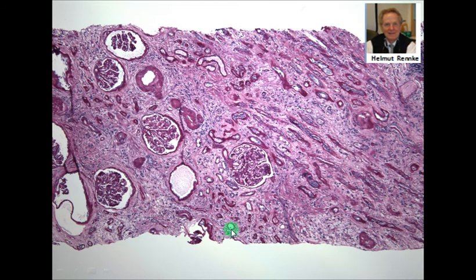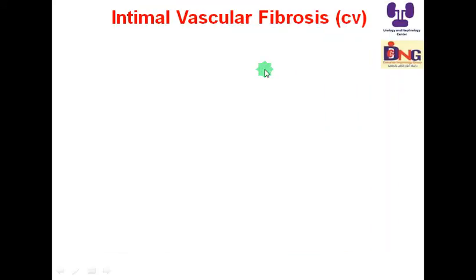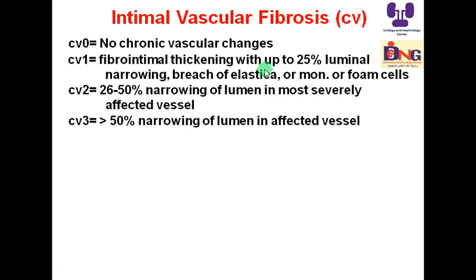Looking at the biopsy, the tubules are apart from each other with wide areas of interstitial fibrosis. There is transplant glomerulopathy showing thickening and double contouring — scored as CG. Regarding the vessels, this is not V for vasculitis; it is CV, meaning intimal vascular fibrosis. CV0 means no chronic vascular changes. CV1 is fibrointimal thickening with up to 25% luminal narrowing, bridging of elastica or foam cells.